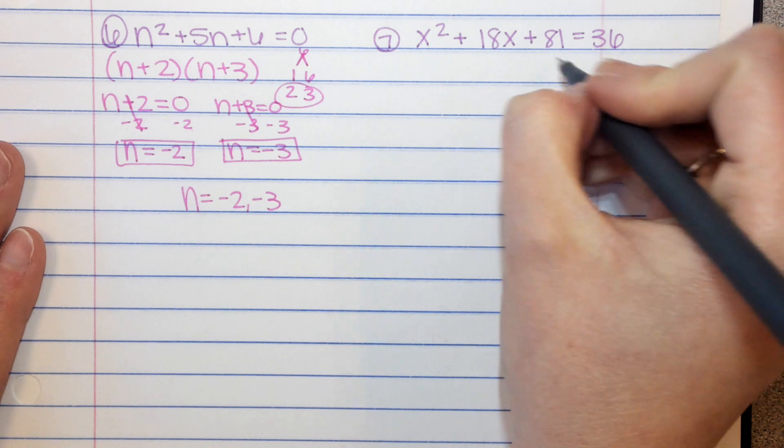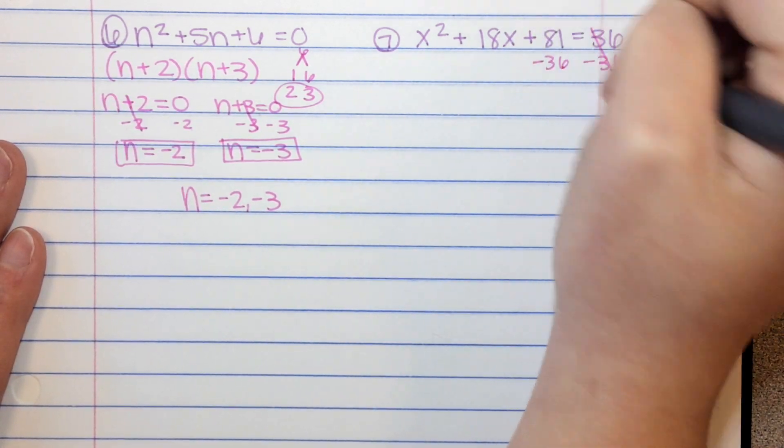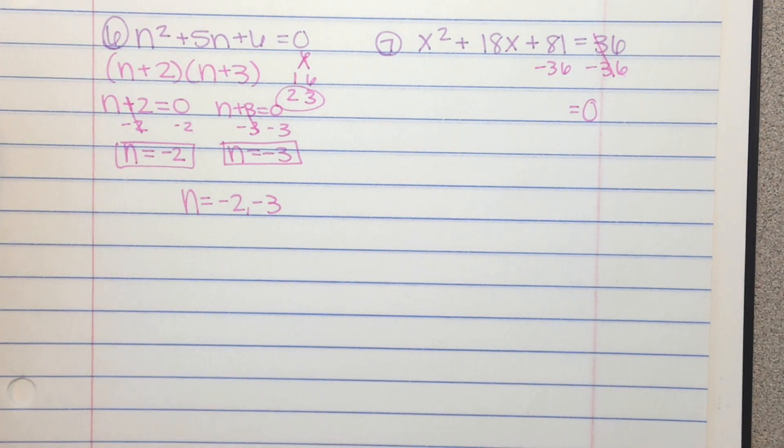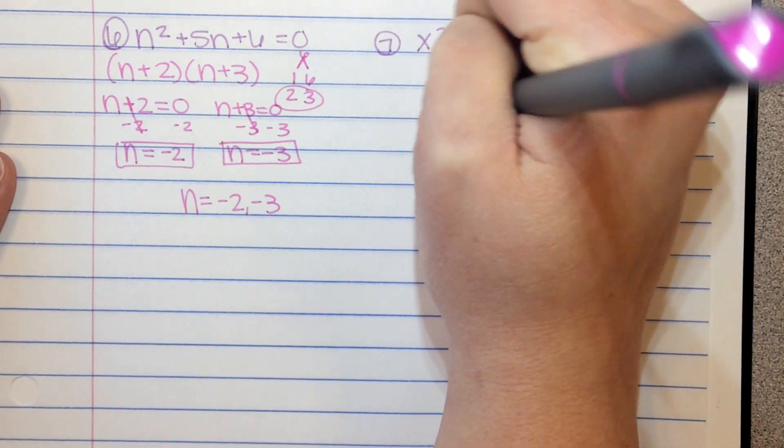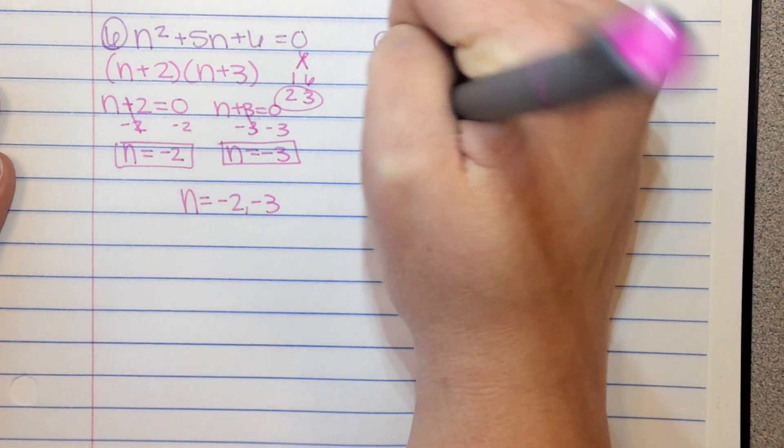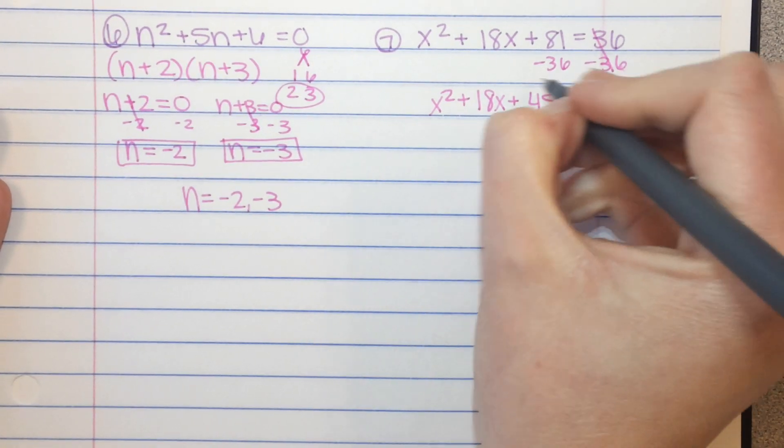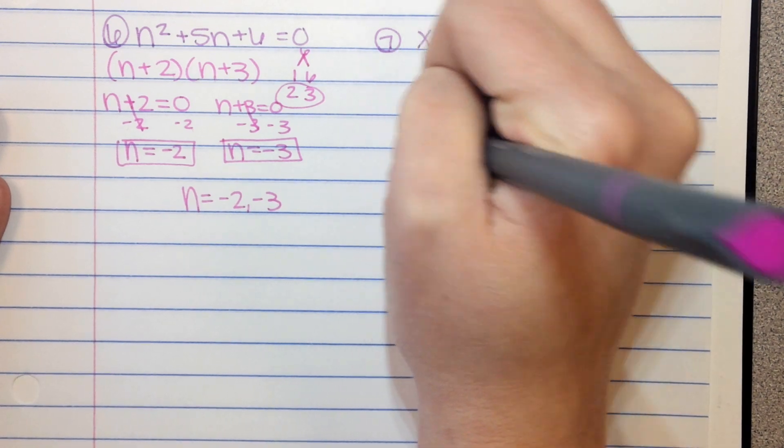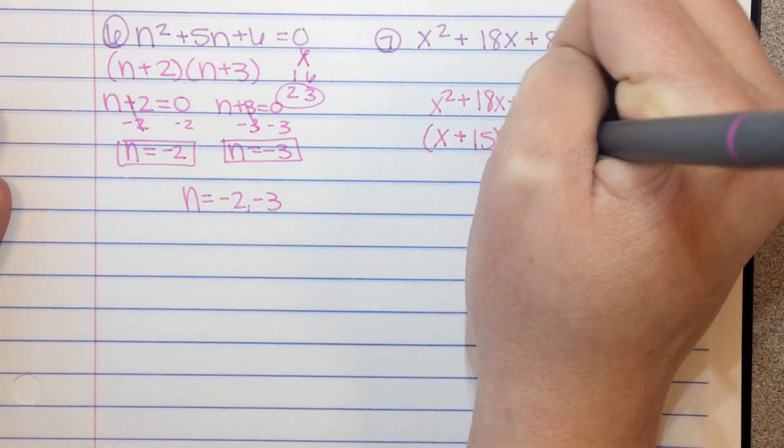This one is not set equal to 0. We have to get this 36 to the other side, so we will subtract it. 81 minus 36 is 45. So we have x squared plus 18x plus 45. So we need factors of 45 that add up to give us 18. That's going to be x plus 15 and x plus 3.